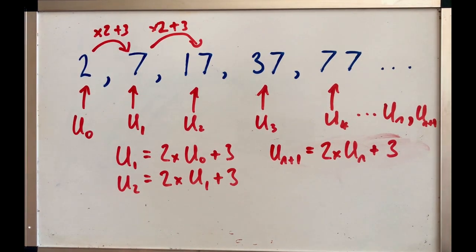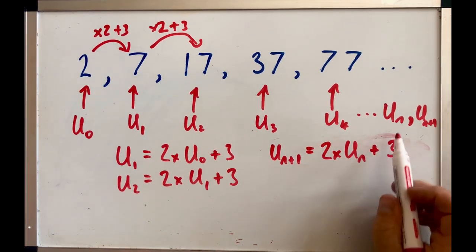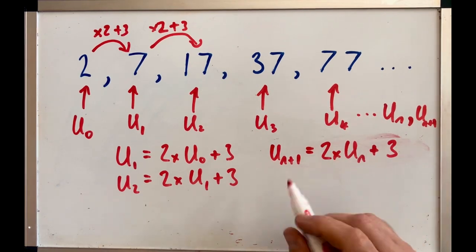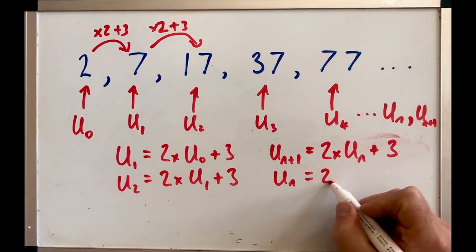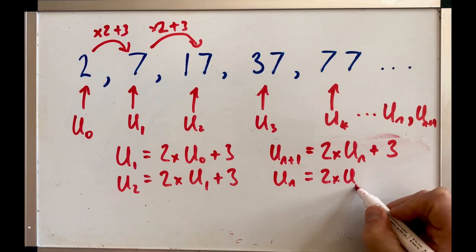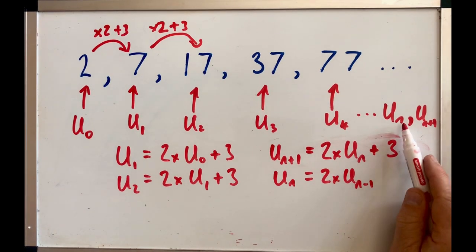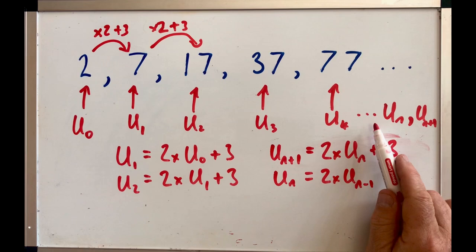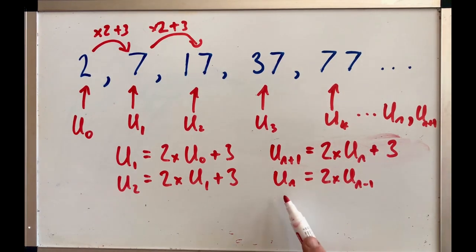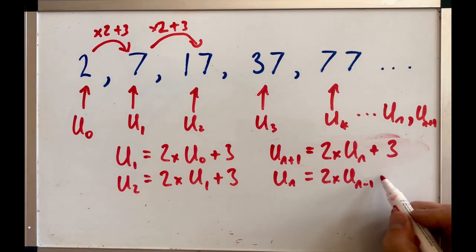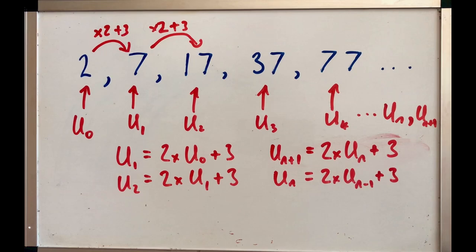Alternatively, you can think of the term before that one. So, you could say U₁ is 2 times the term before, which is U₁ minus 1. So, if that was U₁₀, the term before would be U₉. So, U₁₀ would be 2 times U₉ plus 3. So, that's what we call a linear recurrence relation.